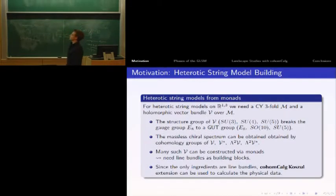Let me first introduce the idea of heterotic string model building. In heterotic models, we need a Calabi-Yau threefold along with a holomorphic vector bundle. The structure group of this vector bundle will break the gauge group H down to some GUT group: E6, SO10, or SU5.